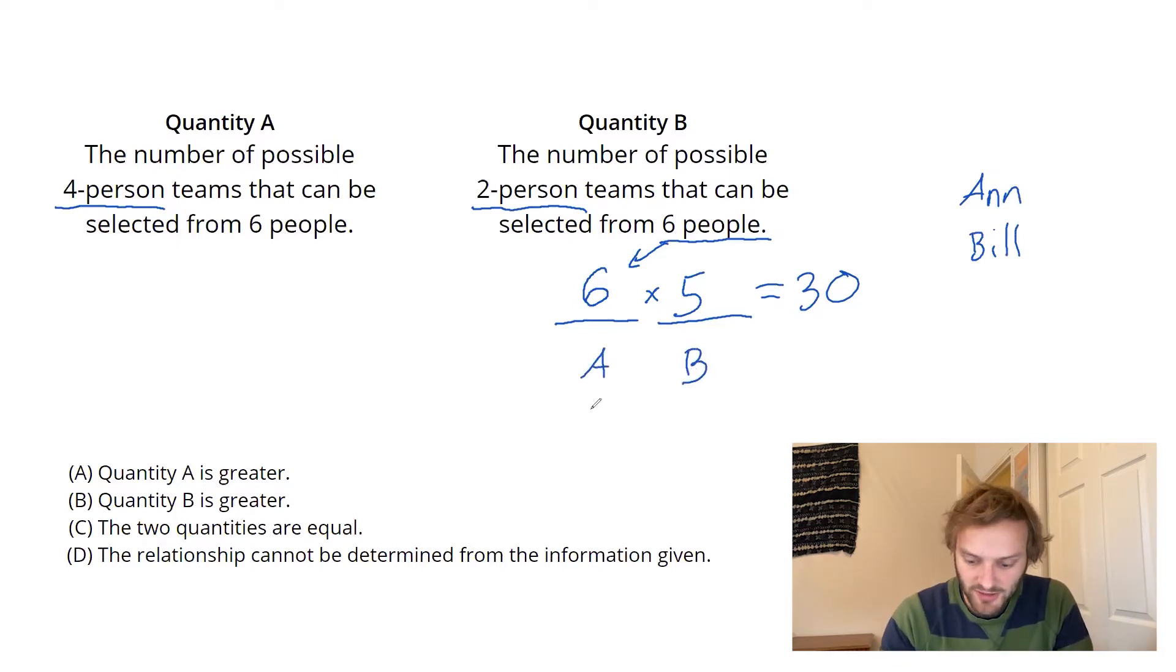If I had Ann and Bill versus Bill and Ann, those are actually the same team, but the branching that we did counts them as two different lists. So what we need to do is divide by two, because basically every pair we just counted with our six times five got counted twice, depending on the order in which they were picked.